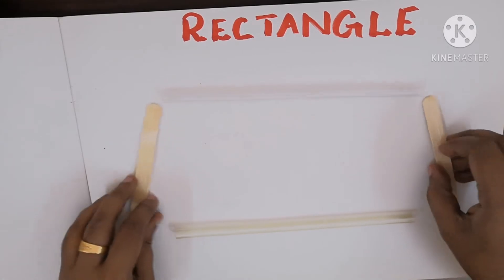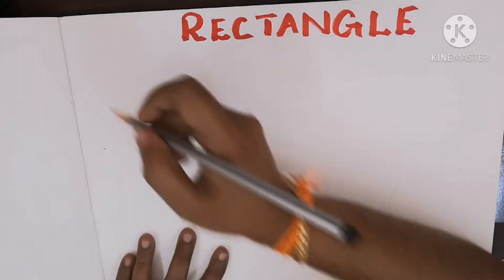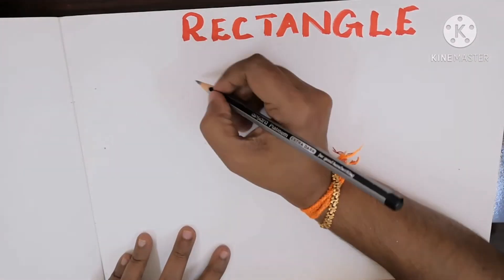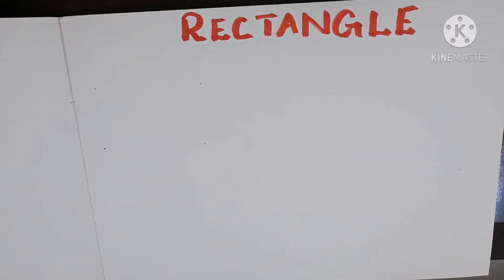First, we will draw a rectangle. And after that, we will do activity. First, we will put four dots. Rectangle has four corners, so first we will put four dots.